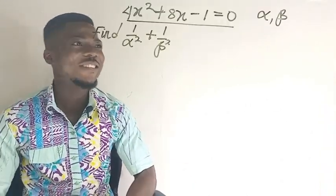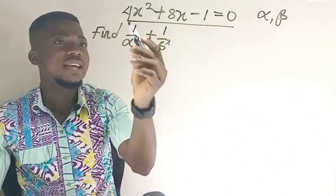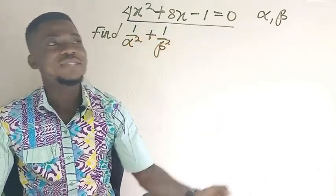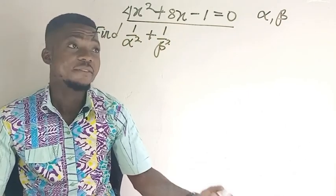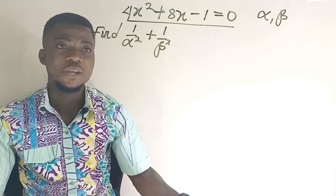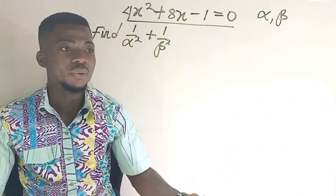So in this video, we're going to learn how to solve some questions under symmetrical functions. So in case you're here for that, then let's begin. This is going to be our first question for the day. The question says that the equation 4x squared plus 8x minus 1 equals 0 has roots alpha and beta. And if it's like that, then we're going to find 1 over alpha squared plus 1 over beta squared. When you have a question like this, how do you do it? Let's get straight to it.